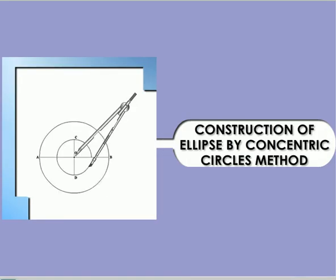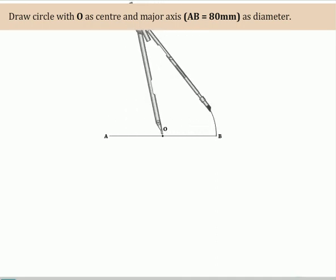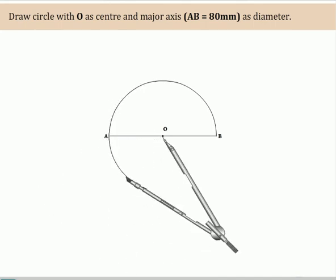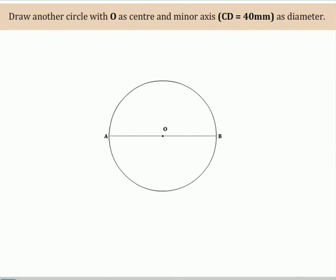Construction of ellipse by concentric circles method. Draw a circle with O as center and major axis AB of dimension 80 mm as diameter. Draw another circle with O as center and minor axis 40 mm as diameter.